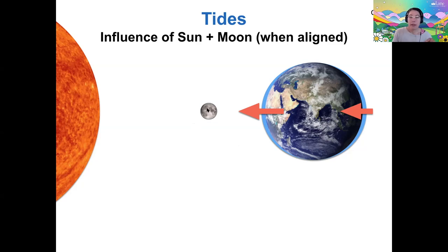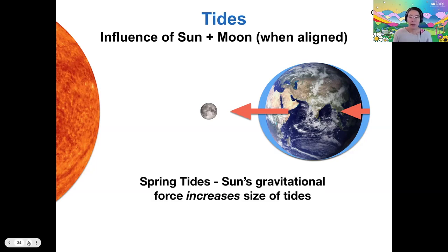And so therefore, when the Earth, Moon and Sun are aligned, then the tides are a little bit bigger. And so what we call this is the spring tide, not because it happens in the spring. I don't know why it's called spring tide, because they spring up to a higher position, I guess. And so this is when the sun's gravitational force increases the overall size of the tides.